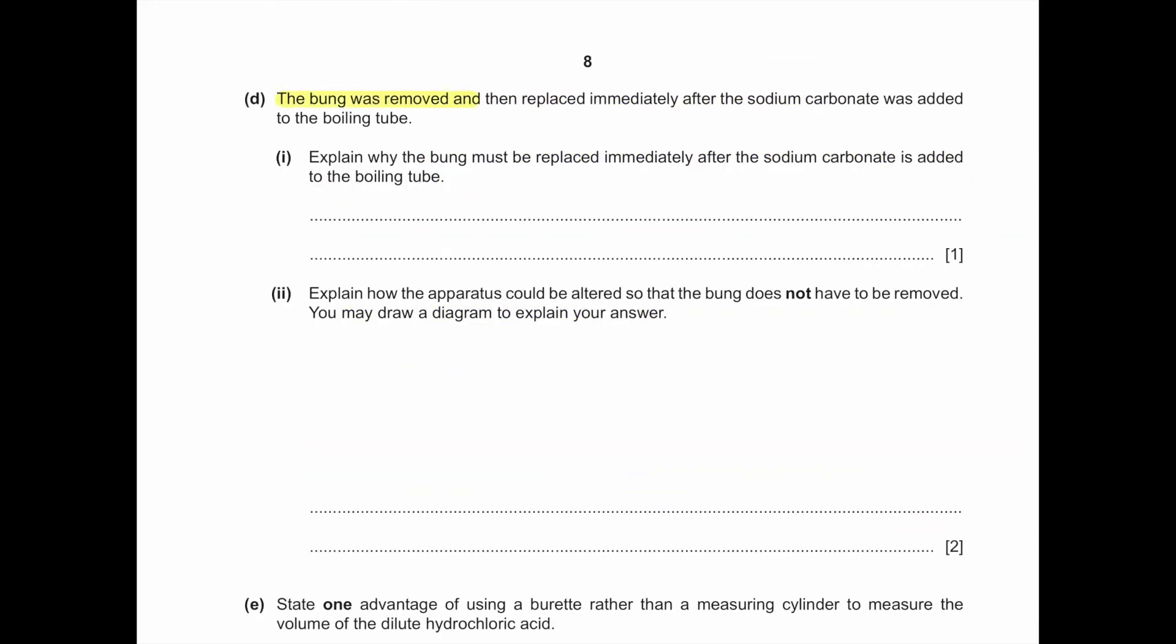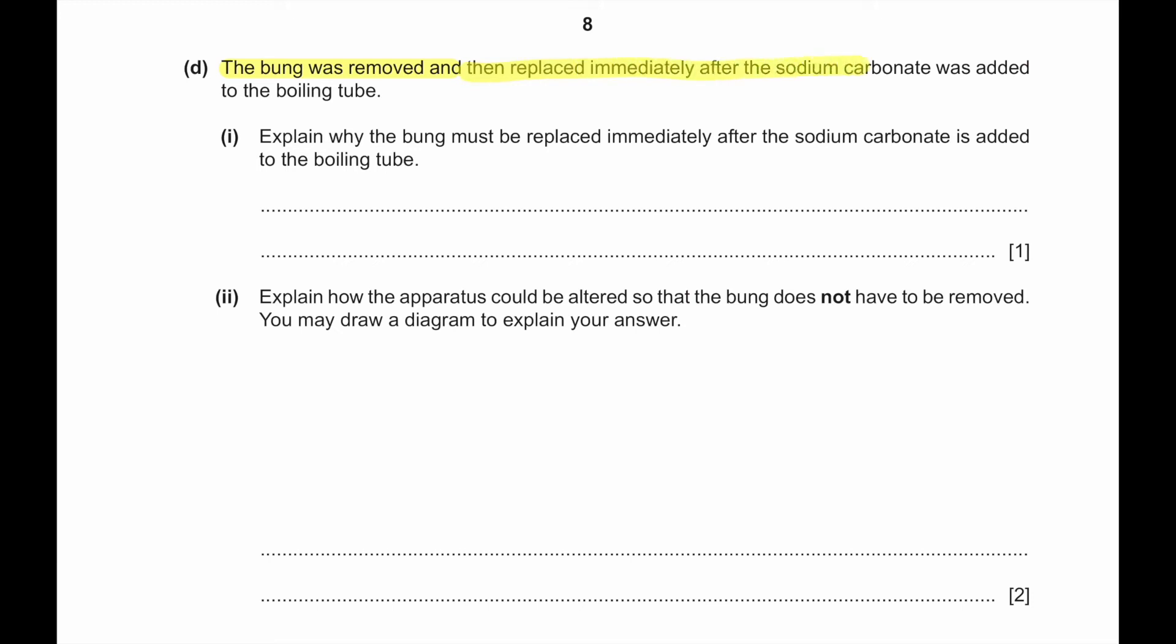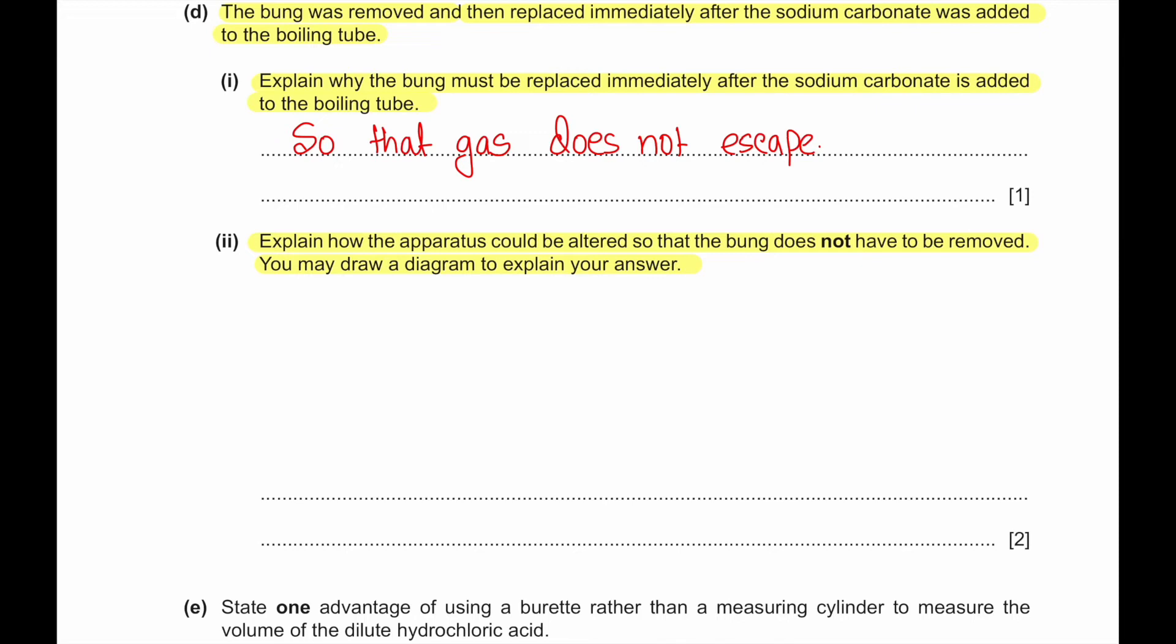Part D. The bung was removed and then replaced immediately after the sodium carbonate was added to the boiling tube. Explain why the bung must be replaced immediately after the sodium carbonate is added to the boiling tube. So the bung prevents the gas from escaping. Part 2. Explain how the apparatus could be altered so that the bung does not have to be removed. You may draw a diagram to explain your answer. So basically, what we can do is we can place a reagent tube inside the boiling tube, which we can then shake to start the reaction.